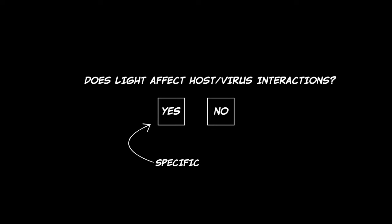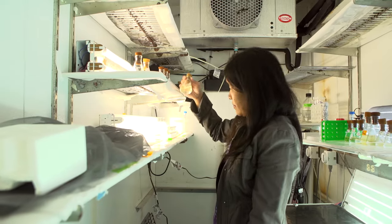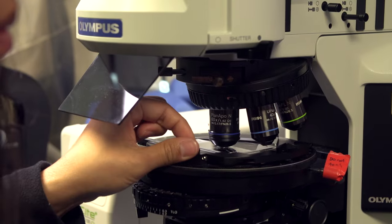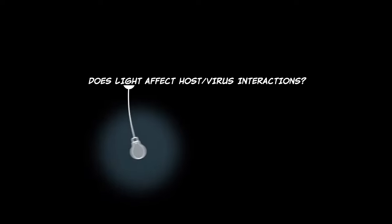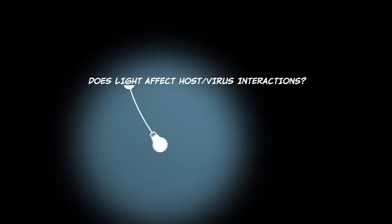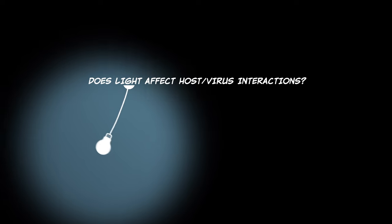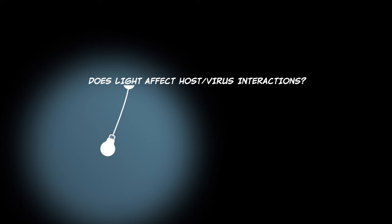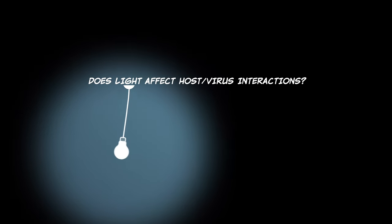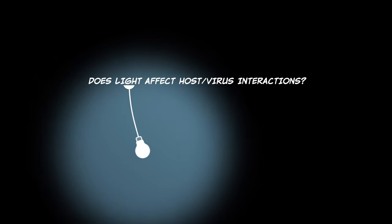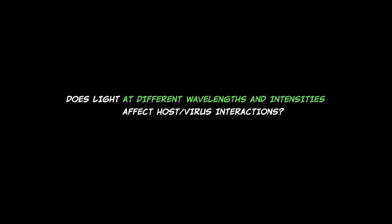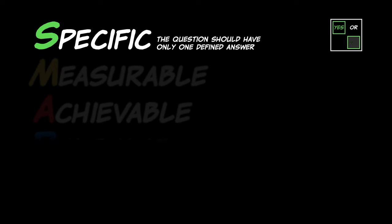Now you can design experiments to test that question. In order to answer that specific question, you have to design a number of different experiments — it's not one experiment per question — because light is still very broad. Light can have different intensities and different wavelengths. They did experiments infecting in the dark, in constant light, and at different light irradiances. So the question becomes: does light at different wavelengths and intensities affect host-virus interaction? Specific — check.